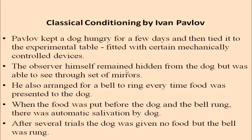Pavlov did an experimental study wherein he kept a dog hungry for a few days and then tied it to an experimental table fitted with certain mechanically controlled devices. The observer himself remained hidden from the dog but was able to see through a set of one-way mirrors. He also arranged for a bell to ring every time food was presented to the dog. When food was put before the dog and the bell rung, there was an automatic salivation by the dog. After several trials, the dog was given no food but the bell was only rung.